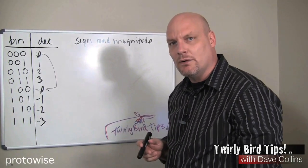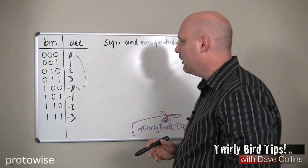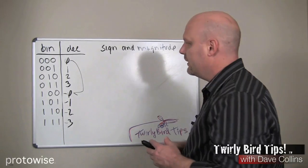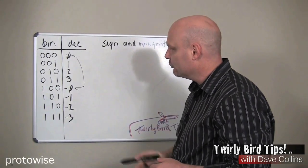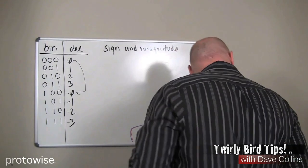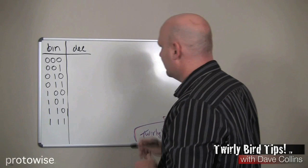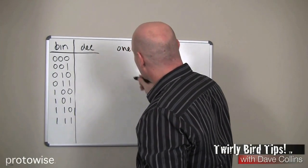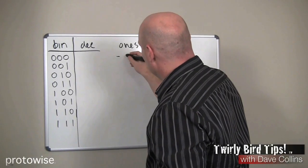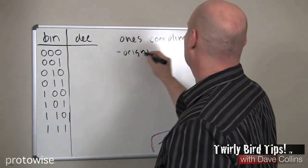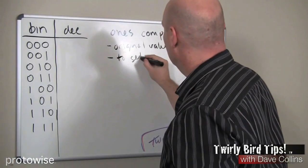One drawback of sign and magnitude is the idea of two zeros — a negative zero doesn't make intuitive sense, and that's an ugly artifact of this system. We'll see that at least one more system has the same problem. There are also hardware implementation issues with sign and magnitude, making it not ideal. Another way to represent negative numbers is with what's called one's complement.